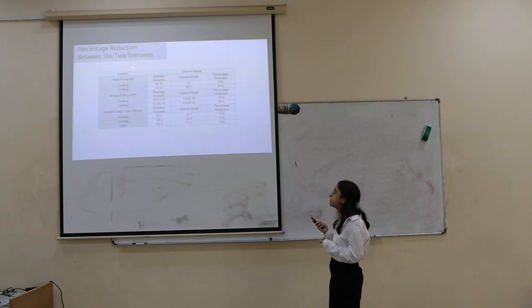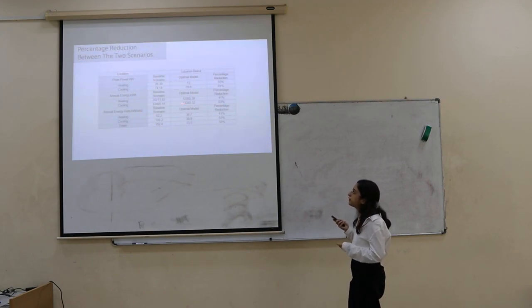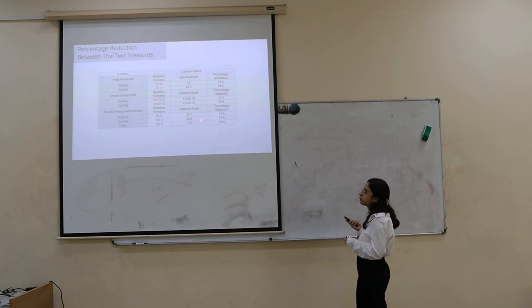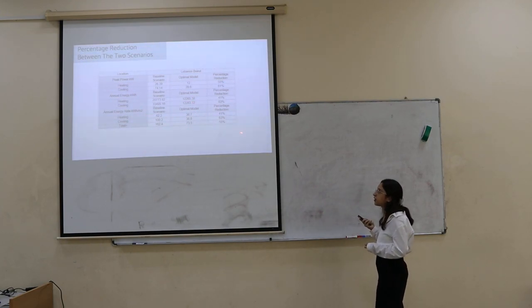I can see that the heat power and heating cooling annual energy, as well as the annual energy rating for the optimal model, the total was 73.5 kilowatts, which is around 55% reduction from the baseline.